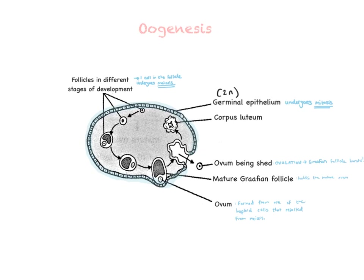The rest of the follicle disintegrates into a structure called the corpus luteum, which results from the ruptured Graafian follicle. The corpus luteum has the very important job of secreting the hormone progesterone, which maintains pregnancy if the ovum is fertilized — the corpus luteum would keep producing progesterone. The other hormone produced during oogenesis is estrogen, which is produced by the Graafian follicle. The Graafian follicle secretes estrogen; the corpus luteum secretes progesterone. Both hormones travel in the blood to the uterus and thicken the uterine wall for pregnancy.